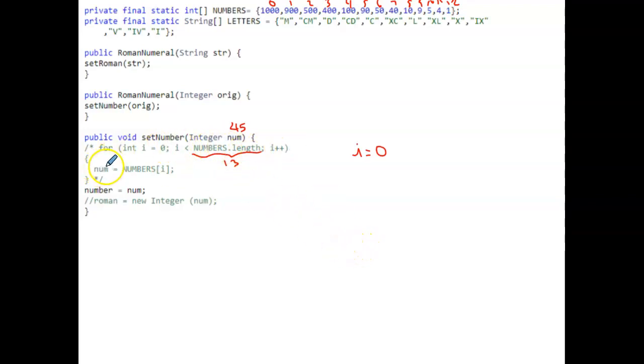And then we're going to increment i by 1. So the first thing that you have happening here, the only thing you have happening in your for loop, is you're taking the value num that was passed by parameter, so the number we're trying to convert to Roman numerals is 45, you're taking that and you're reassigning its value to numbers sub i, which is 0. And so now we've just made the value we were trying to change to a Roman numeral into the integer 1000.